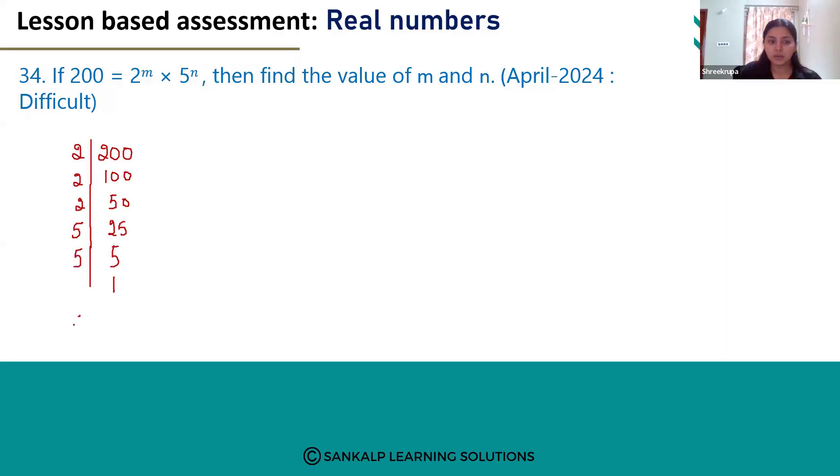So the factors of 200 are 2 multiplied 3 times and 5 multiplied 2 times. So the powers will become 2 power 3 multiplied by 5 power 2. So the values of m and n are m is equal to 3 and n will become 2. These are the powers.